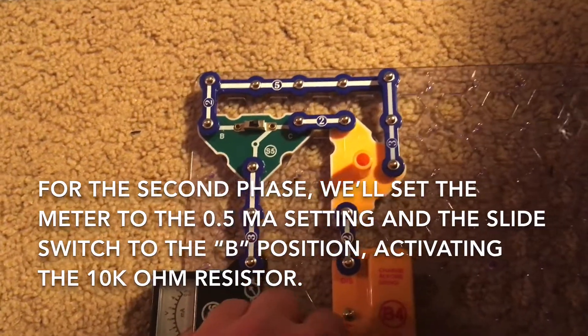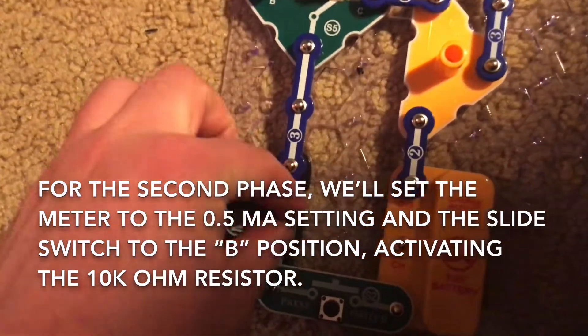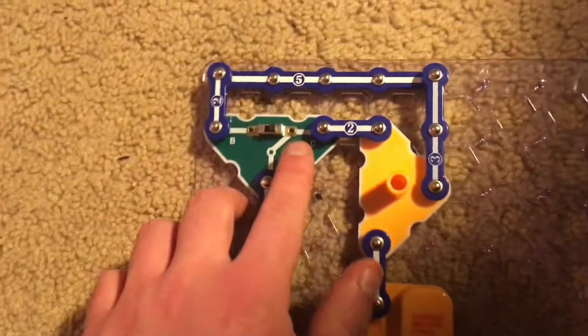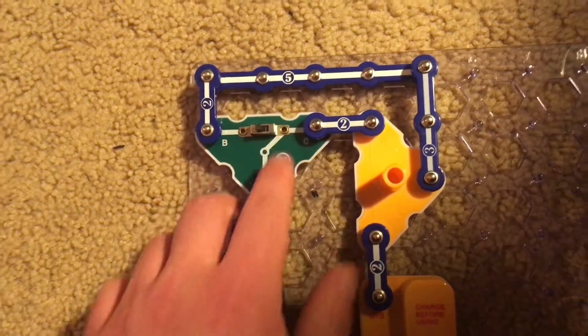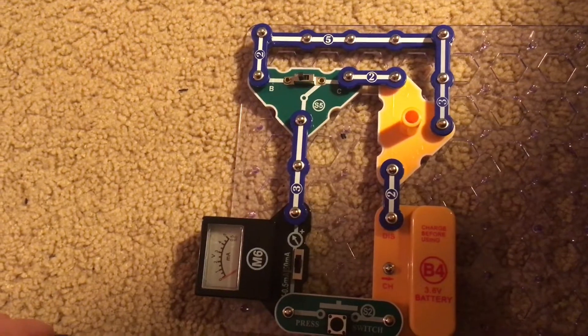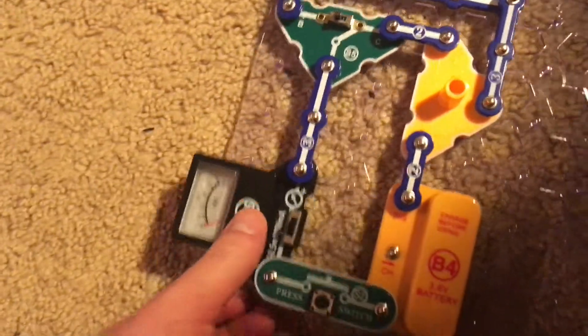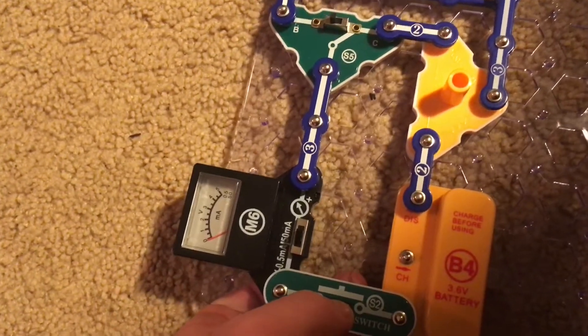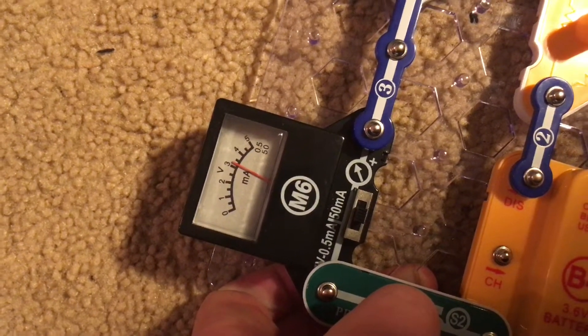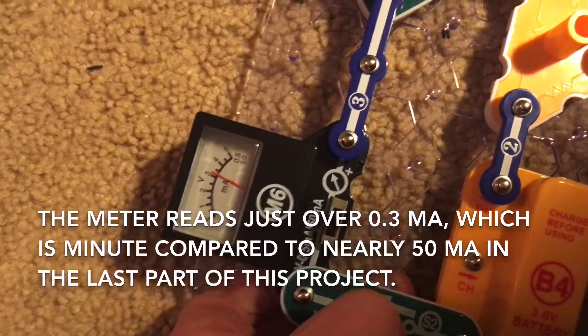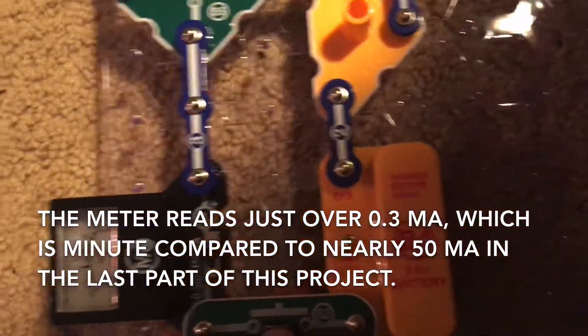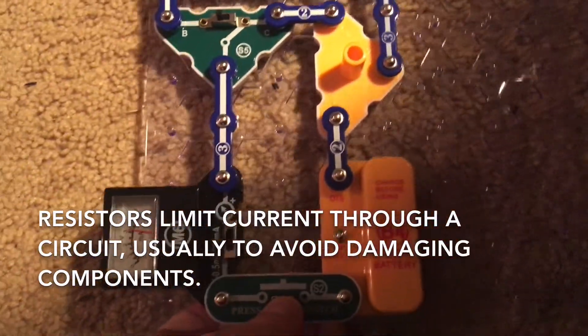For the second phase of this project, we will set the voltage meter to the 0.5 milliamps setting, and then move the slide switch to the B position. Now the 10,000 ohms resistor is in the circuit, and when I hit the press switch, the meter reads just over 0.3 milliamps. That's a very small amount of current that is flowing through the circuit compared to in the first phase.